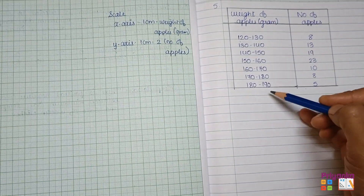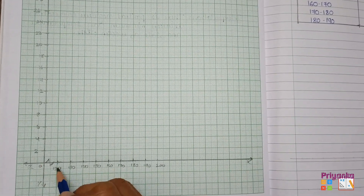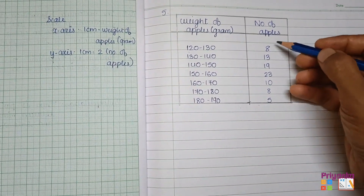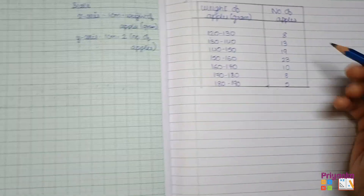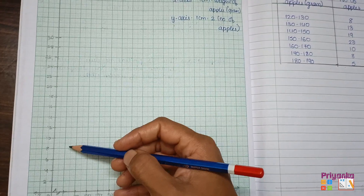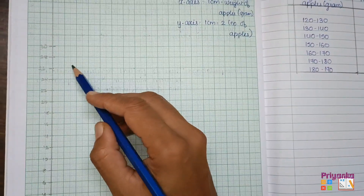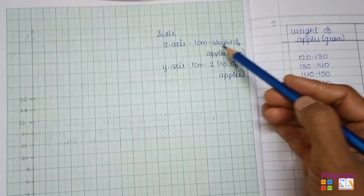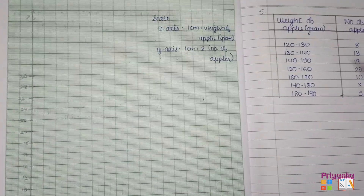The data starts from 120, which goes on the x-axis. Don't forget to put a zigzag line showing you are starting directly from 120. The frequency is shown on the y-axis. The minimum frequency is 5 and the maximum is 23, so I'll use a scale with intervals of 2 on the y-axis: 2, 4, 6, 8, up to 24. Label the x-axis as weight of apple and note the y-axis scale as 1 centimeter equals 2 units.